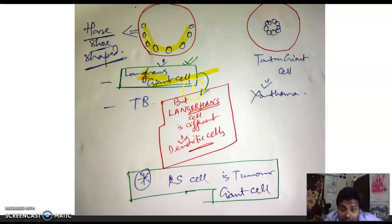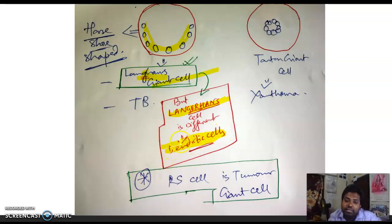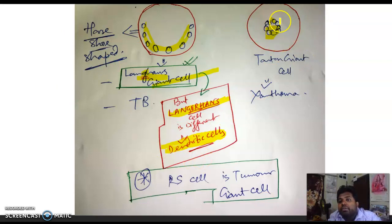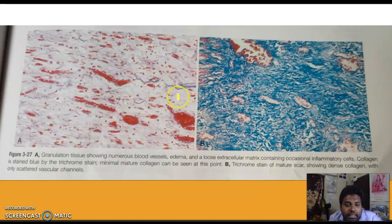Important distinction: Langhans cell is different from Langerhans cell. Langerhans cell is a dendritic (antigen-presenting) cell found in the skin — not part of a granuloma — and it causes Langerhans cell histiocytosis. Touton giant cell has nuclei arranged in a necklace pattern and is seen in xanthoma. Reed-Sternberg cell is a tumor giant cell seen in Hodgkin's disease.